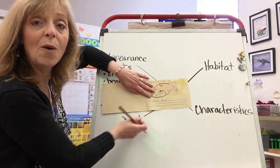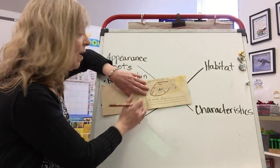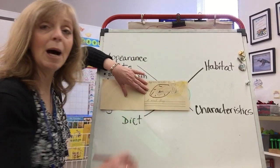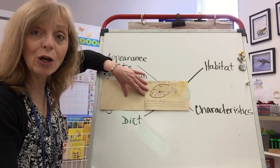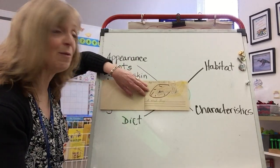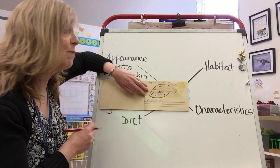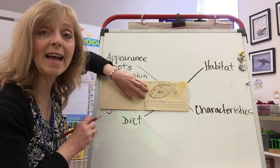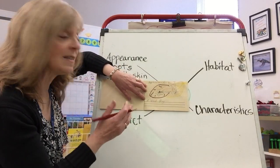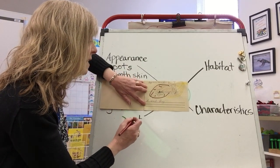Now when I'm writing about appearance, I'm just writing about what it looks like — nothing else. I'm not writing that it jumps. I'm not writing that it lays eggs or doesn't lay eggs. I'm just writing about what it looks like. So what you've drawn is what it looks like.